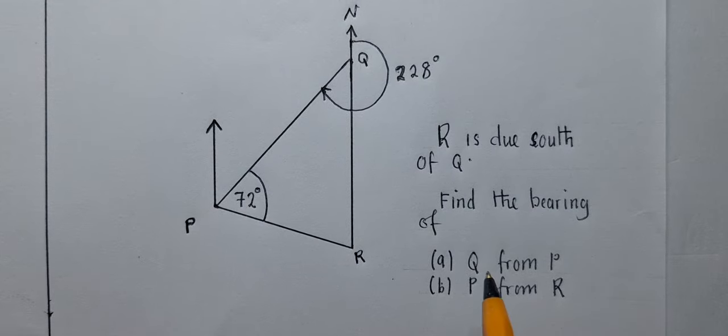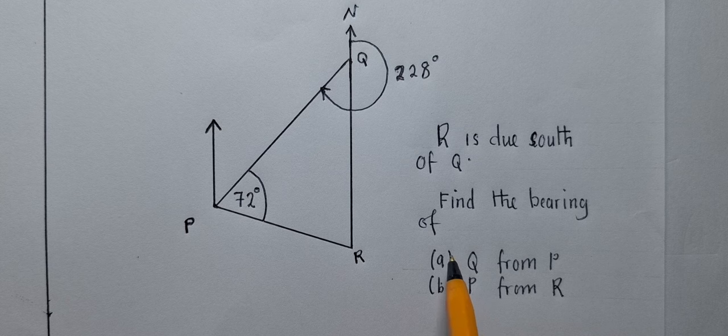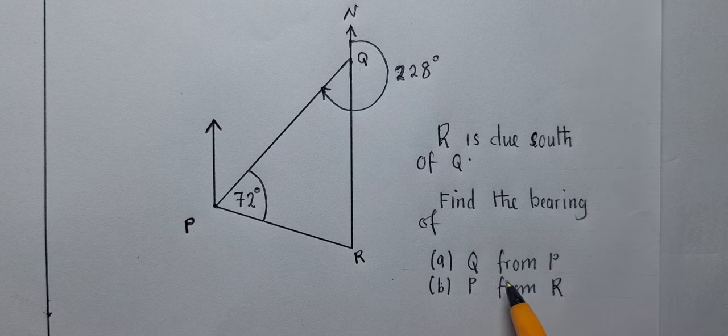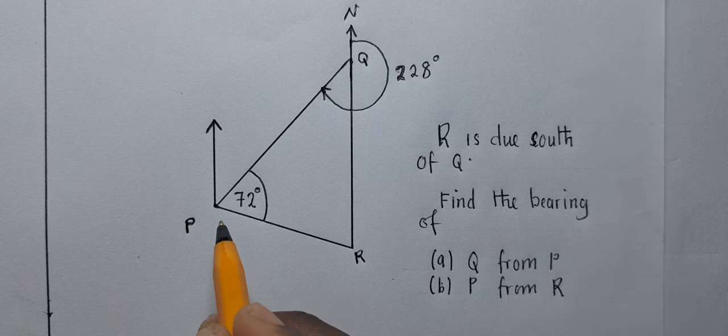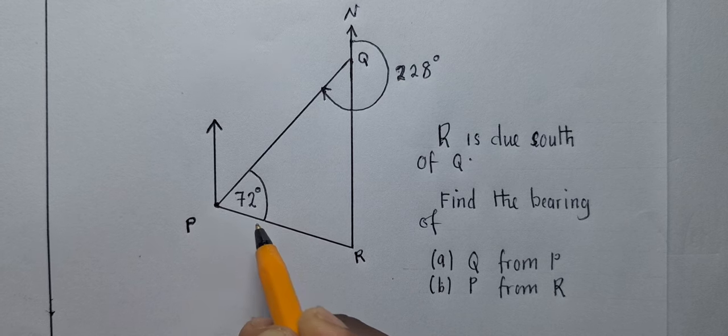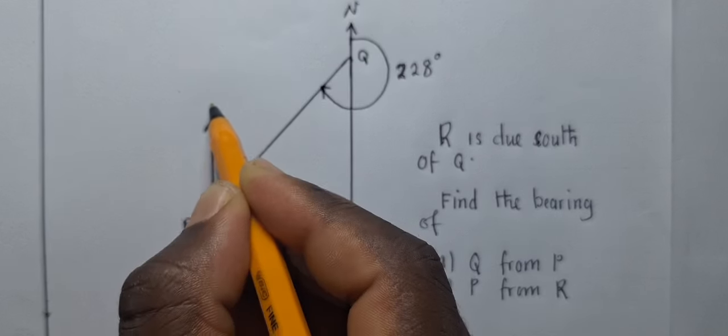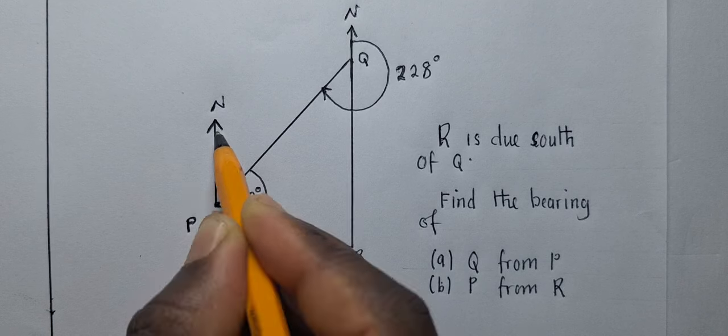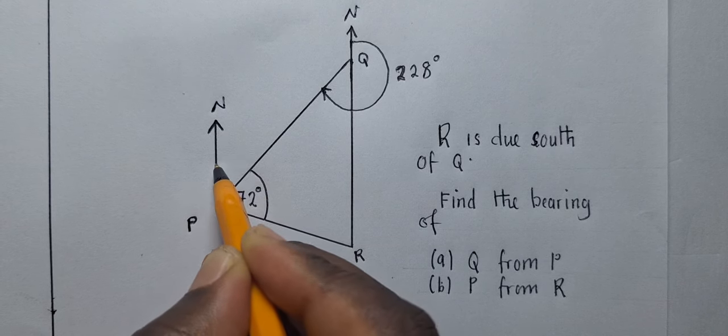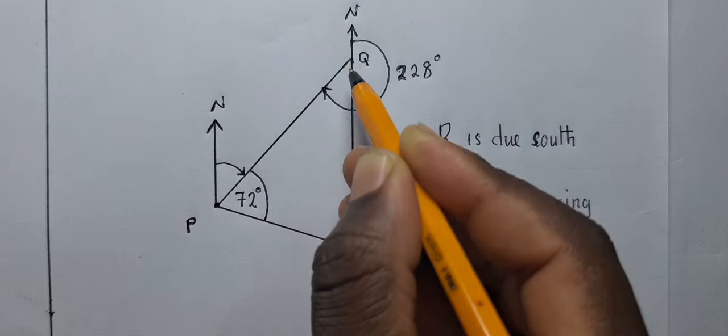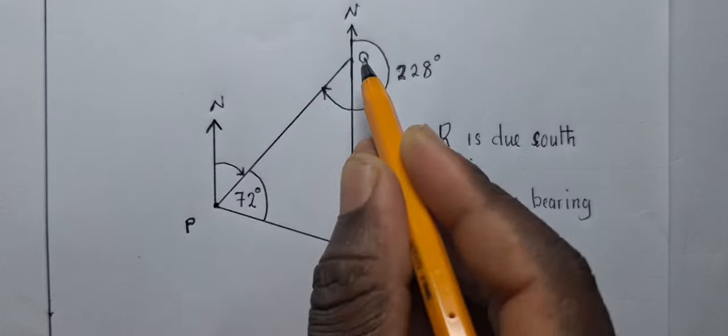So now how do we find the bearing of Q from P? The most important thing when it comes to bearing is the word from. From P meaning you need to stand on point P right here. And with bearings we move clockwise. So when you stand on point P you do your north. This is our north and then you start moving from north all the way up until you touch the line that is joining the two points P and Q.